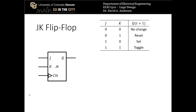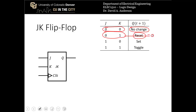Let's review the behavior of JK flip-flops. JK flip-flops have two inputs J and K, a clock, and a single output Q. When J and K are both 0, we get no change for Q — it stays the same as the previous state. When J is 0 and K is 1, Q is reset to 0. When J is 1 and K is 0, Q is set to 1. When J and K are both 1, we toggle Q: if it's 0 it goes to 1, if it's 1 it goes to 0.